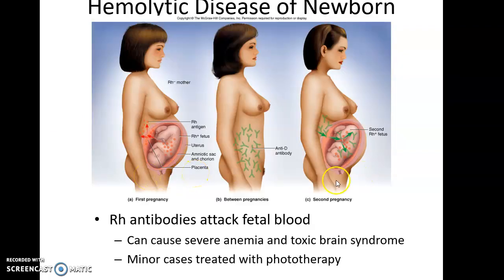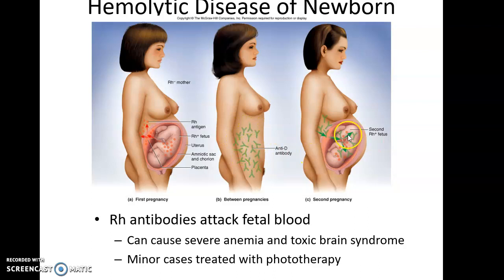Hemolytic disease of the newborn is when the mother is Rh negative and the infant is Rh positive. The first child who is Rh positive will, at some point, have their blood enter the mother's bloodstream, exposing her to the Rh factor. She will then produce antibodies against the Rh factor. If she has a second child who is Rh positive, those antibodies toward the end of the pregnancy can cross the placenta and attack the fetal blood, leading to severe anemia and severe health issues. Luckily, there is a treatment today to prevent the mother's immune system from attacking the infant's blood.